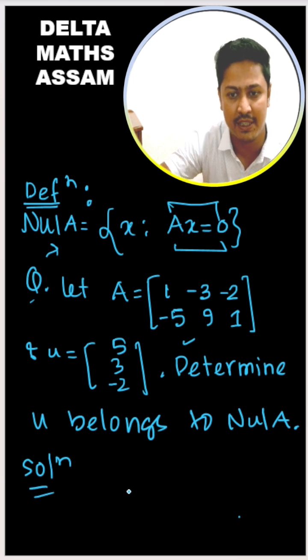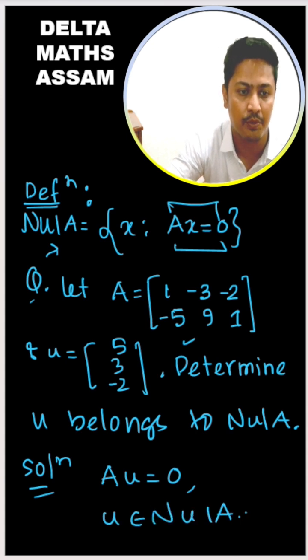That means for u to belong to null space of A, Au must equal 0. We will determine if u belongs to null space of A by computing Au.